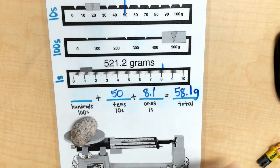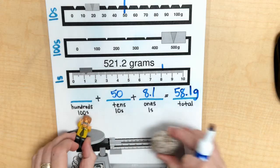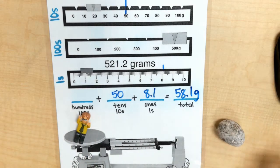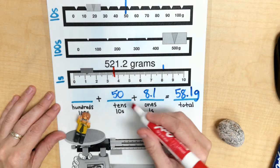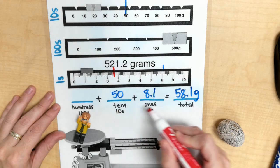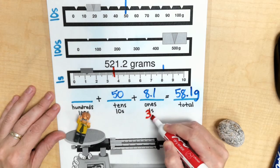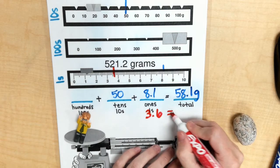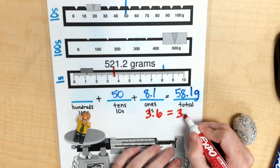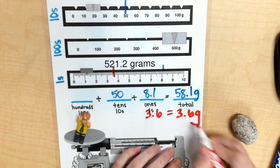Now for my Lego piece, Mr. Dwight over here, we had a little bit of a smaller mass for him. So that was no hundreds, no tens, 3.6 to be exact. So my total mass for my Lego piece is 3.6 grams.